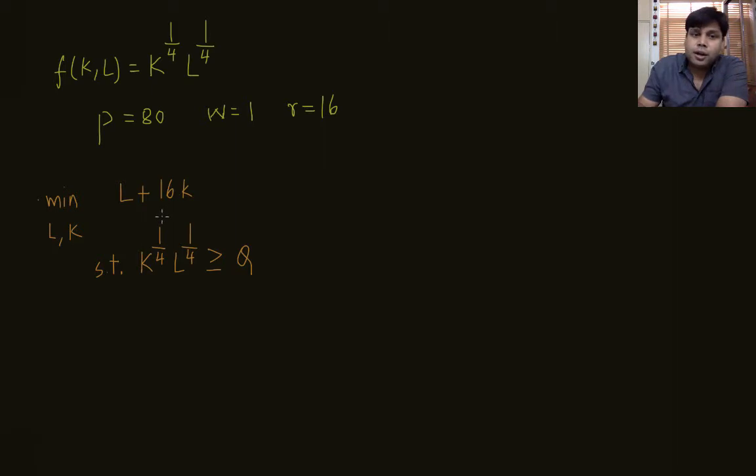Solve this problem by looking at the situation in a graph. This is the isoquant corresponding to q level of output and these are the isocost curves. So the slope of the isocost curves is 1 by 16, so they're really flat lines. If you want to minimize cost, then the solution will have the property that the slope of the isocost line equals the slope of the isoquant.